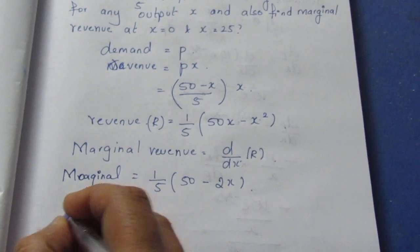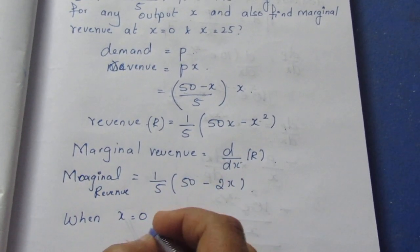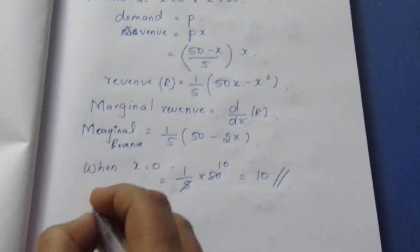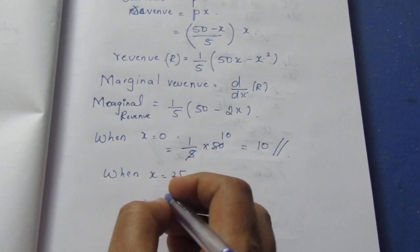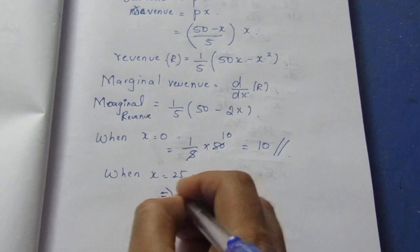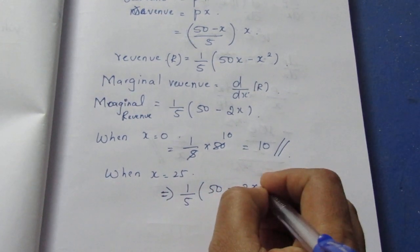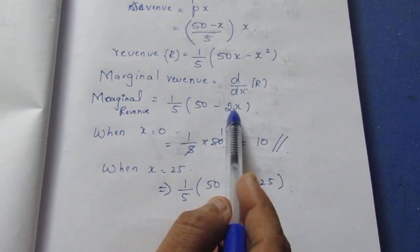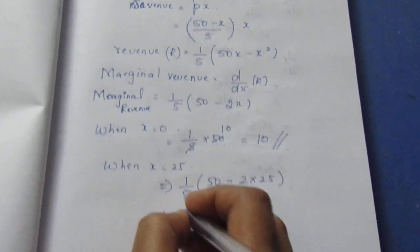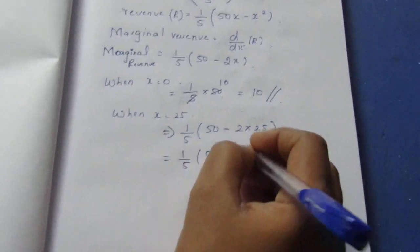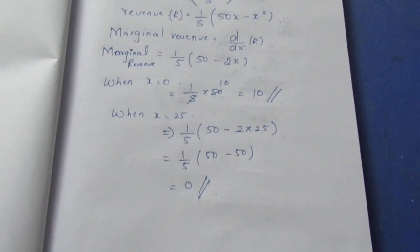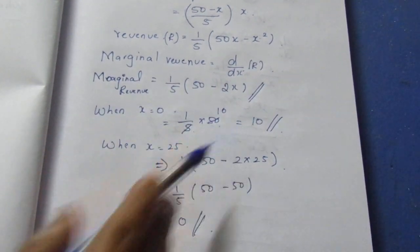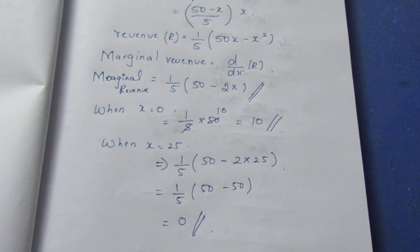When x is equal to 0: substituting into the marginal revenue expression gives 50 minus 1 by 5 into 0, which equals 50. When x is equal to 25: we get 1 by 5 into 50 minus 2 into 25, giving the marginal revenue at x equals 25.